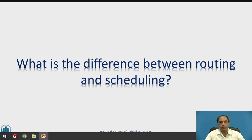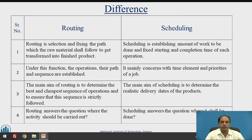Finally, what is the difference between routing and scheduling? Routing is deciding the route; scheduling is the detailed timetable. Routing is the selection and fixing of the path, whereas scheduling is the establishment of the moment of work done and the time of each operation. Routing involves functions, operations and sequences, whereas scheduling involves the time element and priorities. The main aim of routing is to determine the best and cheapest sequence of operations, whereas the main aim of scheduling is to determine realistic delivery dates.